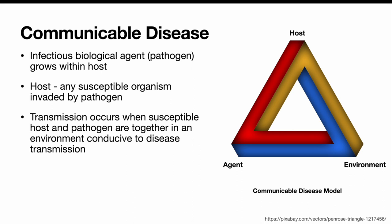When we talk about communicable disease, we talk about an infectious biological agent or pathogen that grows within a host. We have this communicable disease model — a triangle with the pathogen or agent, and the host. A host is any susceptible organism invaded by a pathogen. Transmission occurs when a susceptible host and a pathogen are together in an environment conducive to disease transmission.